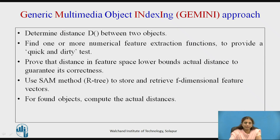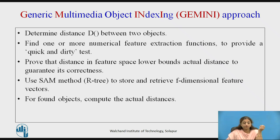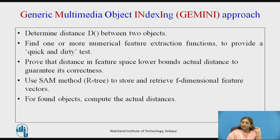The Gemini approach has the following steps: first, decide the distance function — the domain expert specifies whether to use Euclidean distance, Canberra distance, or another, depending on the data. Second, find numerical features using an extraction function for the quick and dirty test. Third, prove that the distance in feature space lower bounds the actual distance. Fourth, use a spatial access method to store and retrieve f-dimensional feature vectors. Fifth, compute the actual distance for qualifying objects.